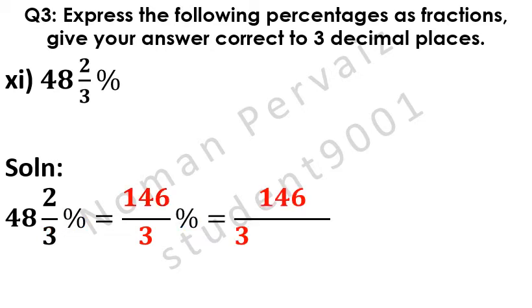Now, 146 by 3 is written. Percentage sign is removed by dividing with 100. Please note here that 3 is already in division. So, it will be multiplied with 100. Is equal to 146 comes as it is. Here, 3 is multiplied with 100 becomes 300.